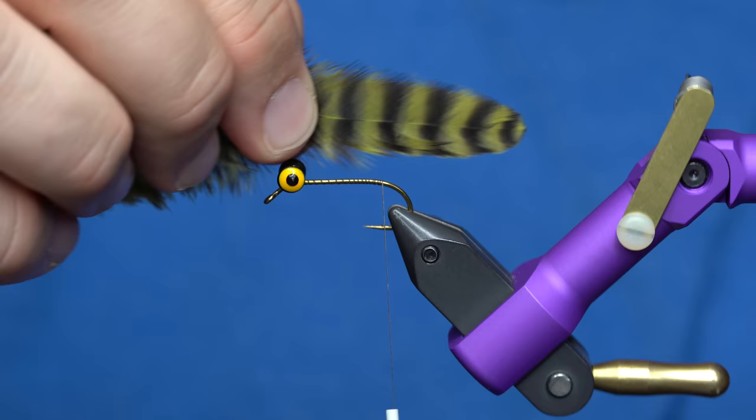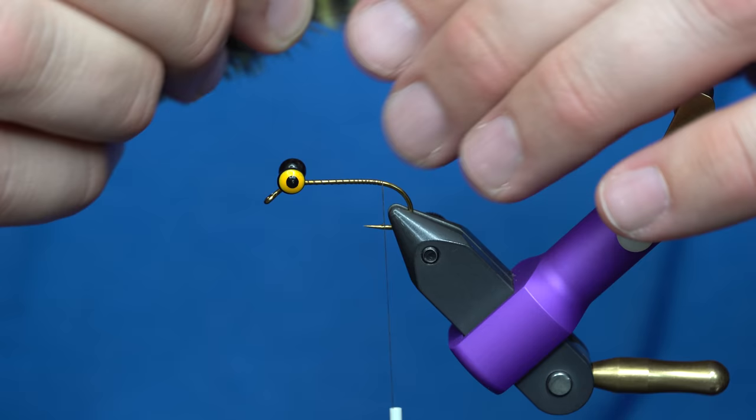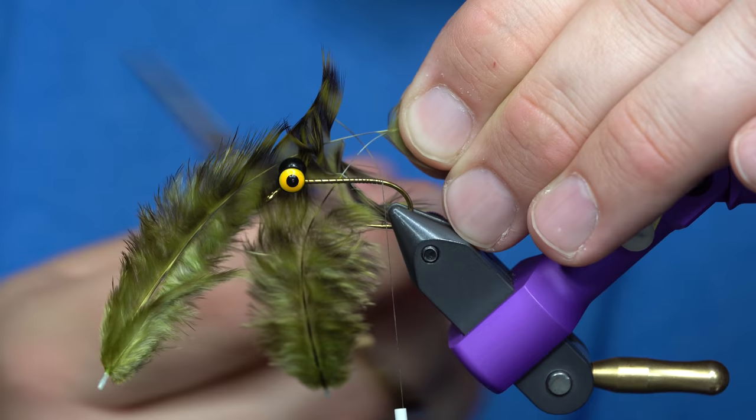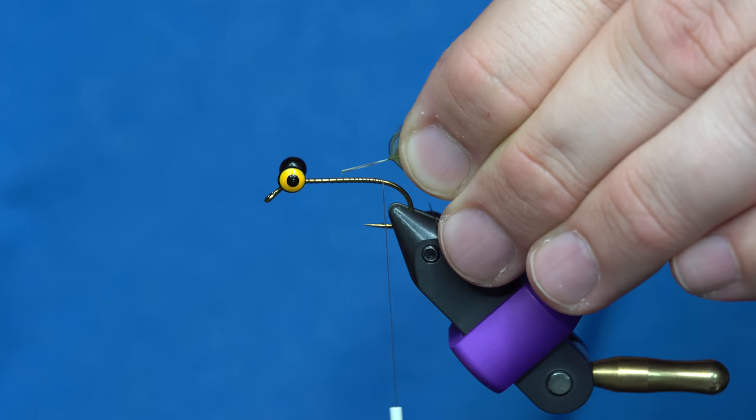And I want that to be, I don't know, roughly shank length. So when I get it where I want it, I'm just going to peel off some fibers and then come in here and trim them. Now, you can see how those hackle stems want to cross over.